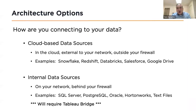The architecture of Tableau Cloud depends on how you're connecting your data. There are two types of data sources. Cloud-based data sources are external to your company's network, outside the firewall — examples include Snowflake, Redshift, Databricks, Salesforce, and Google Drive. Internal data sources are on your network behind your firewall — examples include SQL Server, Postgres, and Oracle. Which type you use will determine your migration strategy.